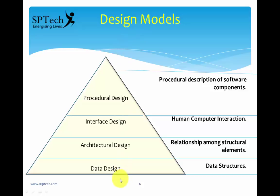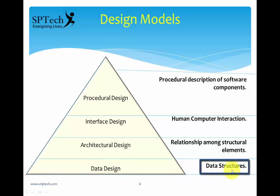Now, what exactly is a design model? The design model tells you the different levels of design. The initial level is called data design, whose outcome is a data structure — this could be arrays or a database structure with tables and other elements. This data structure is derived from the entity relationship model that came from the analysis stage.